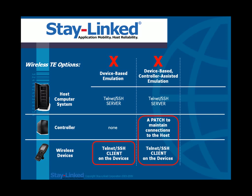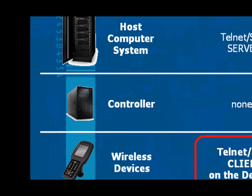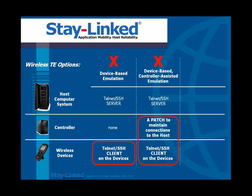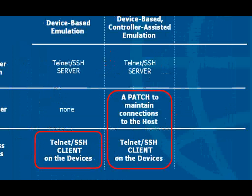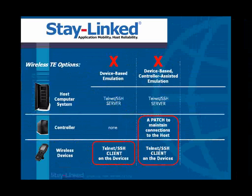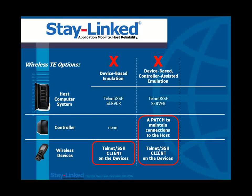A partial solution to this is to introduce a hardware controller in between the wireless devices in the user's hands and the host computer system where the Telnet or SSH server is. The big problem with this partial solution is that the device itself — in the form of the controller, the hardware equipment — becomes the single point of failure. If that controller is unavailable for any reason, users cannot connect to the host where the Telnet or SSH server resides, nor can they maintain their connections. Therefore, we see this as a patch to basically address the inherent problem of having the Telnet or SSH client on the device across the wireless network from the Telnet or SSH server on the host.